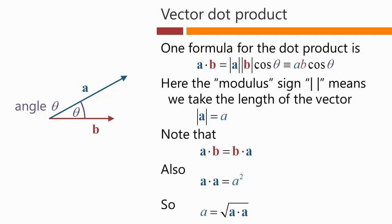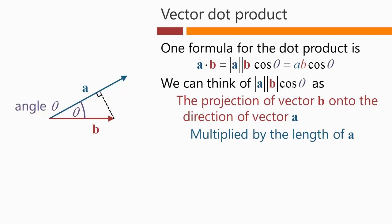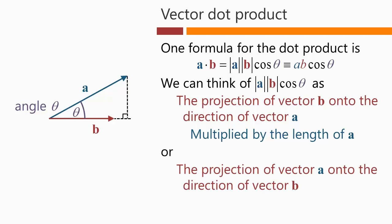Also, A dot A is simply equal to A squared, which means the square root of A dot A is the length of vector A. Looking at the product AB cos theta, we can regard it as the projection of vector B onto the direction of vector A — that's the line projecting down with a right angle — multiplied by the length of A. Equivalently, we can regard it as the projection of vector A onto the direction of vector B, multiplied by the length of B. The formula can be looked at either way.